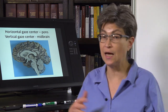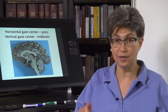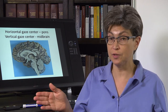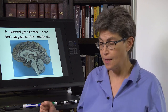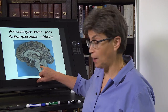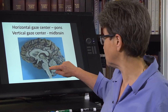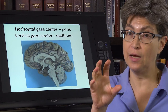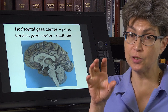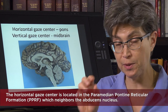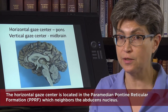Why does that make sense? Because the pons has the abducens nucleus. It does not have any nucleus that can move the eyes up or down. It only has the abducens nucleus, which abducts the eye. The caudal pons, right outside of the abducens nucleus, has an area called the paramedian pontine reticular formation — PPRF. That is the horizontal gaze center.